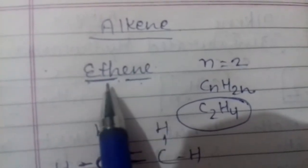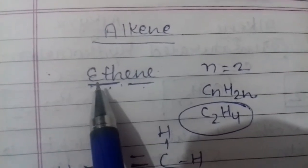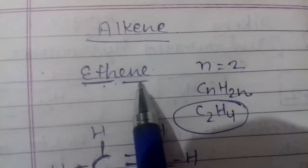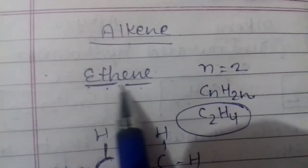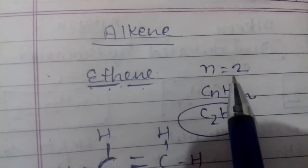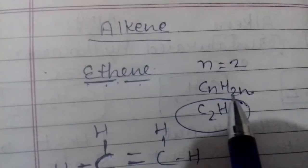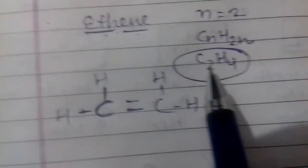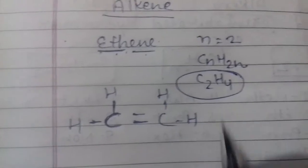Alkyne में हम example लेते हैं, जैसे ethene का। Ethene में two words में हम इसको divide कर लेते हैं - 'eth' और 'ene'। Eth word में number of carbon 2 होता है, और ene है, तो formula यूज़ होगा CnH2n। तो इस formula की help से हमने बना लिया C2H4।